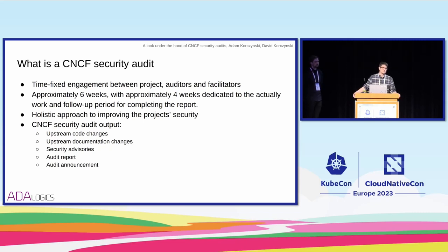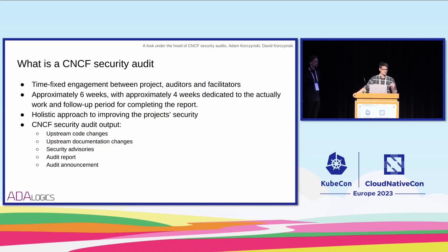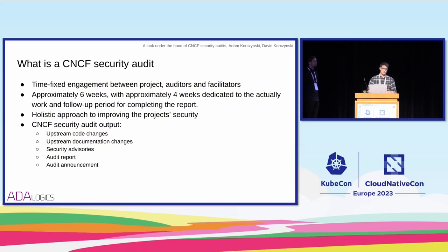So what is a CNCF security audit? It's a time-boxed engagement, although it's a bit flexible. The actors involved are the project maintainers, the auditors — Adam and I — and also the facilitators at the Open Source Technology Improvement Fund. On average, it takes around six weeks per project. Approximately four of those weeks are full-time work looking at the project and doing all the work. Then there's a follow-up period where we show the maintainers the report, share the findings, go over fixes, and there's almost a post-processing to all the core work done.